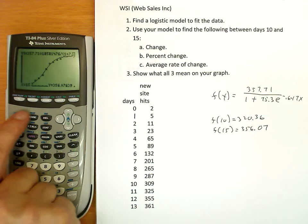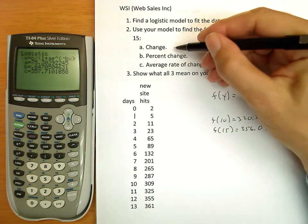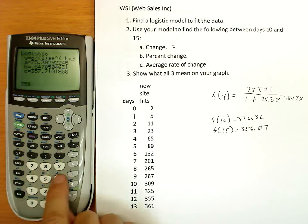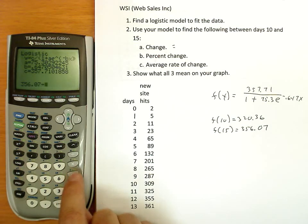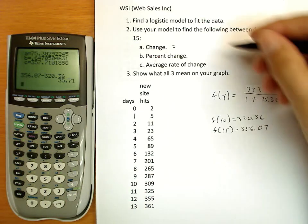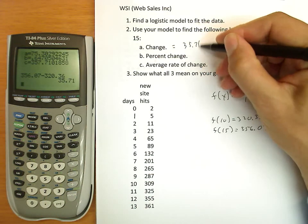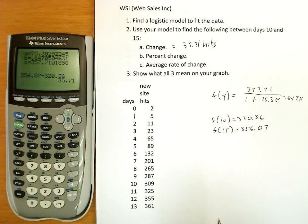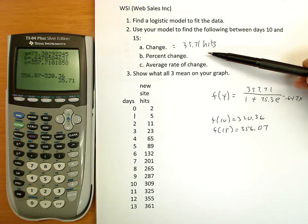The change is merely subtracting one number from the other. So to answer the question of change, it's going to be 356 minus 320, 35.71 hits. We have an increase of 35.71 hits.